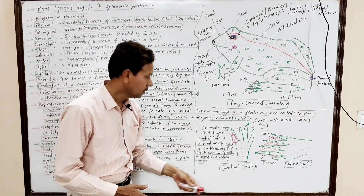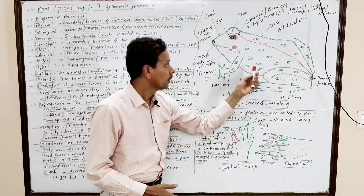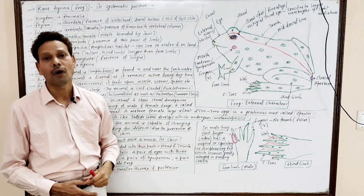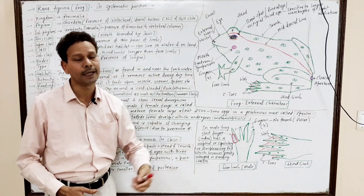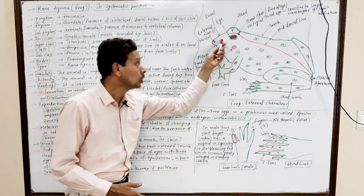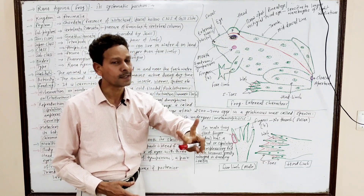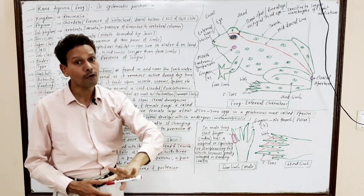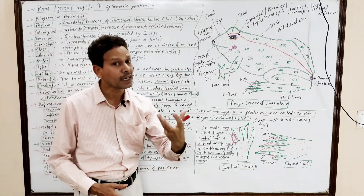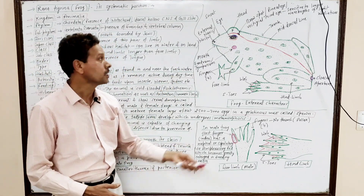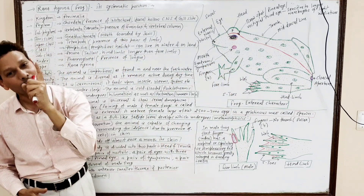In the case of the male frog, during breeding season, it croaks loudly because in the throat region the male frog possesses a pair of vocal sacs, which act as resonators. That is why the male croaks loudly as compared to the female frog.